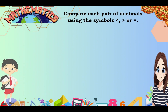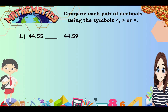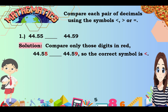Now compare each pair of decimals using the symbols less than, greater than, or equal to. Number 1: 44 and 55 hundredths compared with 44 and 59 hundredths. Notice that all digits except the hundredths digit have the same place value and the same value. So we compare only the differing digits: 5 versus 9. Since 5 is less than 9, the correct symbol is less than. Therefore, 44 and 55 hundredths is less than 44 and 59 hundredths.